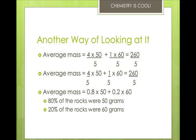Another way of looking at it is this way. You can do it in any one of those ways. 0.8 times 50 plus 0.2 times 60, you can do that. Any of those things are other ways of doing this problem. You don't have to do it the way I do it.